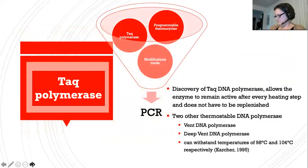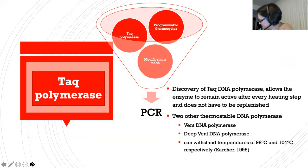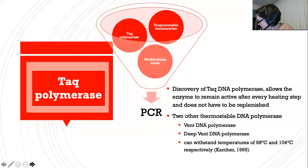When PCR was first discovered, the DNA polymerase used was not stable at high temperatures, so it needed to be replenished for each cycle. Through the discovery by Thomas Brock in the 1960s of Thermus aquaticus, or Taq DNA polymerase, a thermostable bacterium that lives in hot springs, the enzyme is able to remain active after every heating step. Two thermostable DNA polymerases are now used in applications of PCR, discovered near thermal vents on the ocean floor: vent DNA polymerase and deep vent DNA polymerase, withstanding temperatures of 98 degrees Celsius and 104 degrees Celsius respectively.